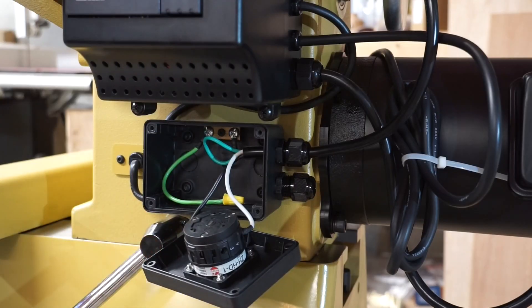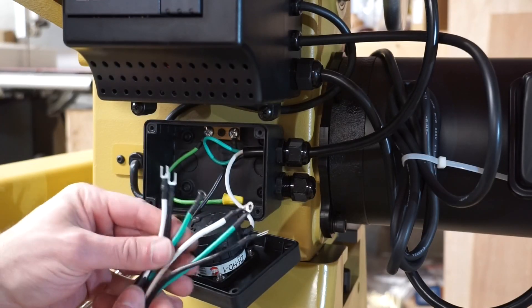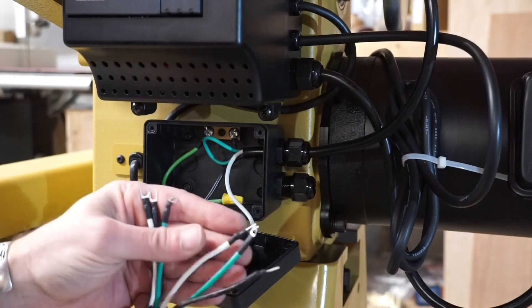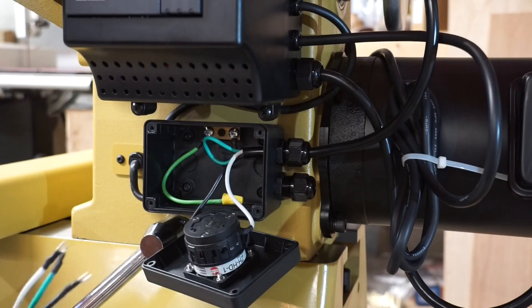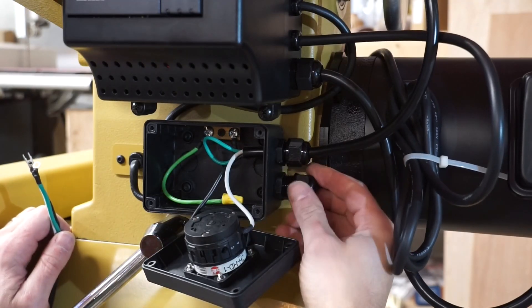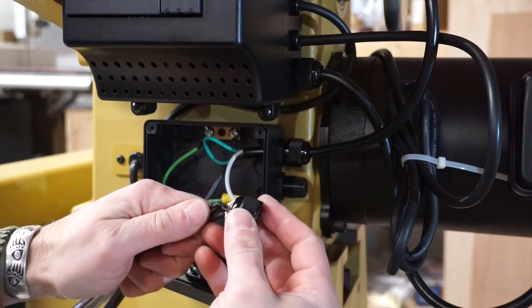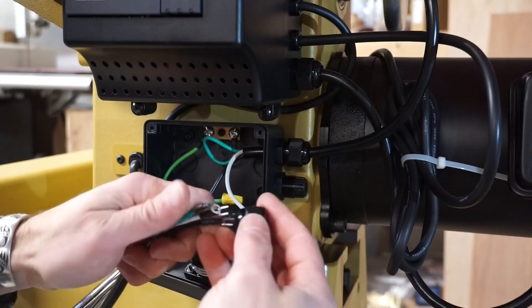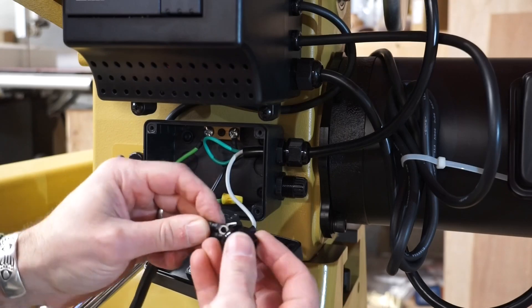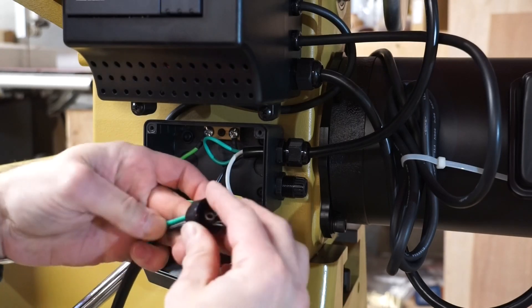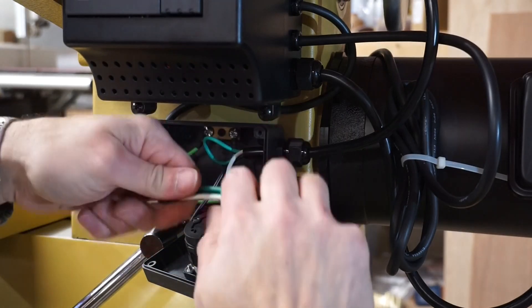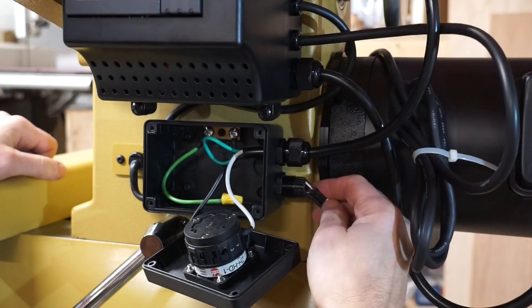Now the supplied wire that they gave us all have the same ends on either end. So what I'm going to do is use the gland on the side here. I'm just going to remove the gland cap. I'm going to slide the wires through the cap here and then through the gland.